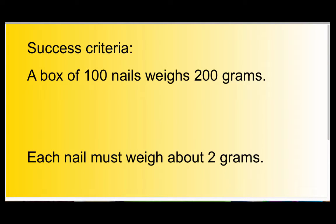Here's your success criteria. If, for example, a box of 100 nails, the same sort of nail, weighs 200 grams, you should be able to understand that each nail weighs about 2 grams. So that would be a success criteria. It's about how you get from here to here that is key. So, let's have a go.